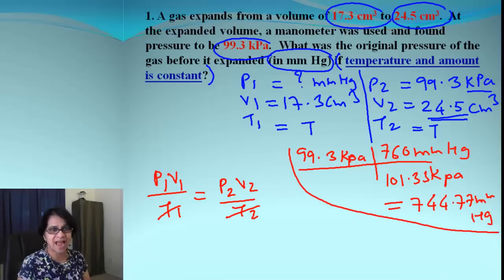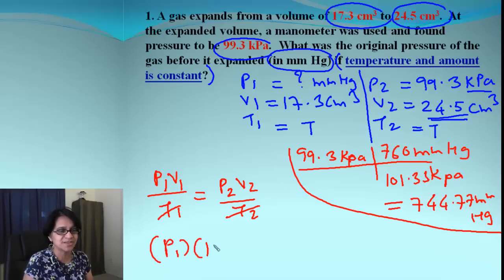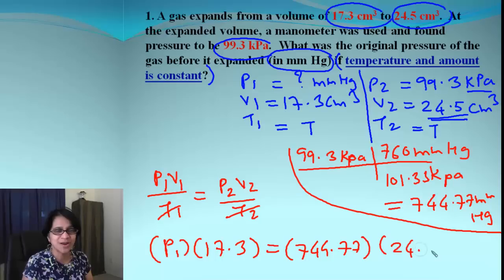Now we are going to use that value and plug in our formula. So what we have is the first pressure which is going to be unknown for us. So it's P1 times the volume which is 17.3 and that is equal to pressure P2 which is 744.77 and then the next volume which is 24.5. And when we solve for P1, what do we get?